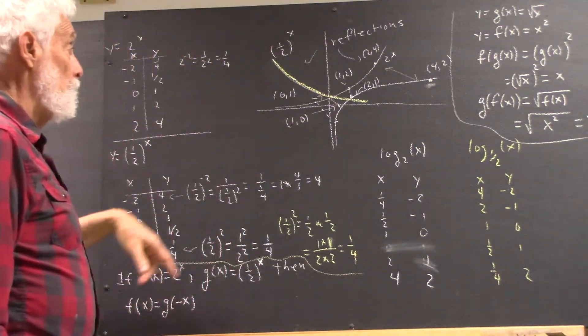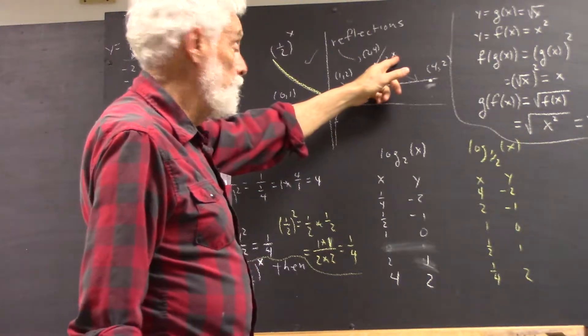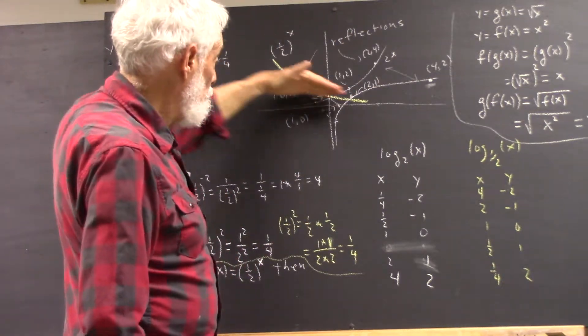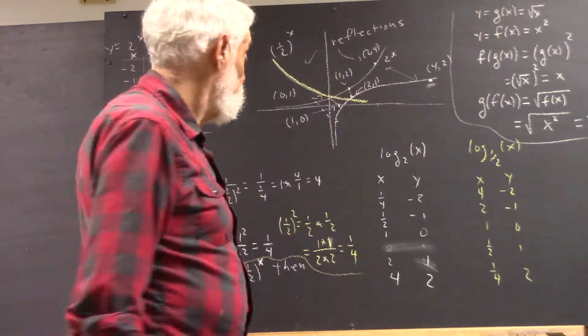Okay, if we plot these points, we find very quickly that the graph of 2 to the x, of course, we know what that looks like. I think we've been seeing that a lot. And the graph of 1 half to the x looks like this, doesn't it? Okay?